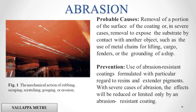Abrasion. Probable causes: removal of a portion of the surface of the coating or, in severe cases, removal to expose the substrate by contact with another object, such as the use of metal chains for lifting cargo, fenders, or the grounding of a ship. Prevention: use of abrasion-resistant coatings formulated with particular regard to resins and extender pigments. With severe cases of abrasion, the effects will be reduced or limited only by an abrasion-resistant coating.